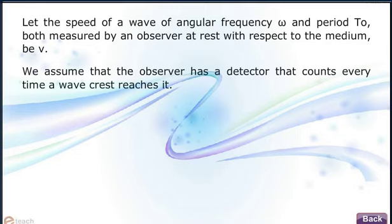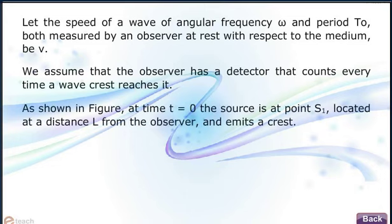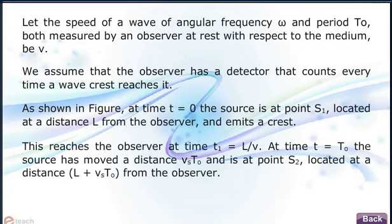We assume that the observer has a detector that counts every time a wave crest reaches it. As shown in figure, at time t equals 0, the source is at point S1 located at a distance L from the observer and emits a crest.